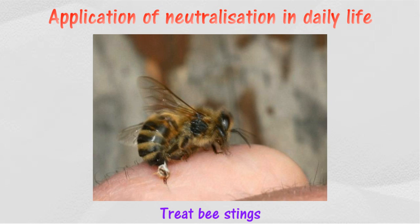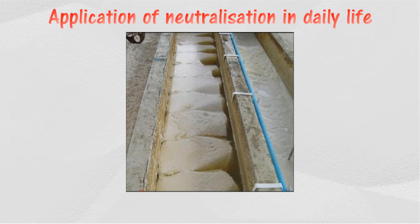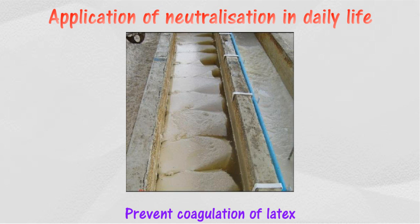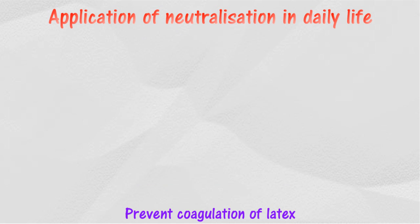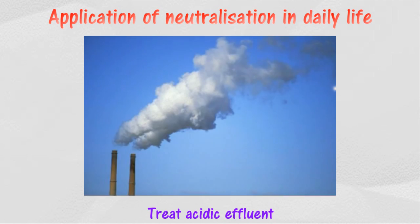Vinegar, which contains ethanoic acid, is used to neutralize the alkali. Bacteria in latex produce organic acids which coagulate latex. Ammonia is used to neutralize the organic acid produced by bacteria to prevent coagulation.